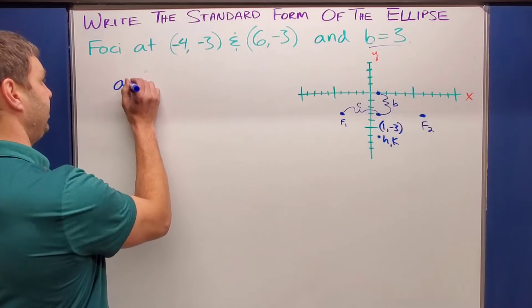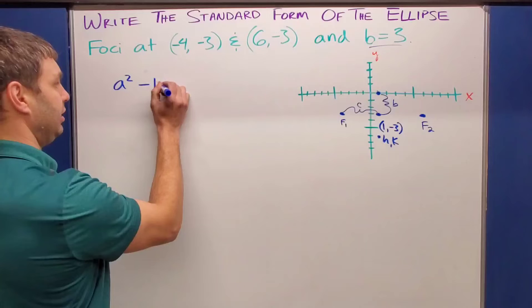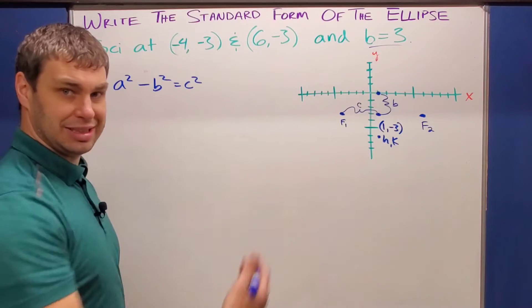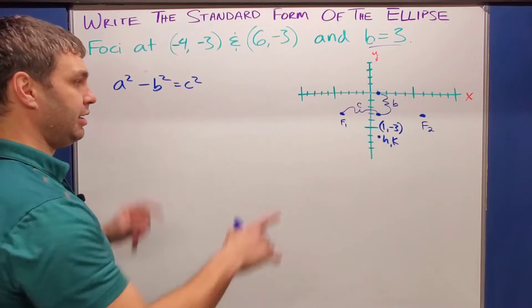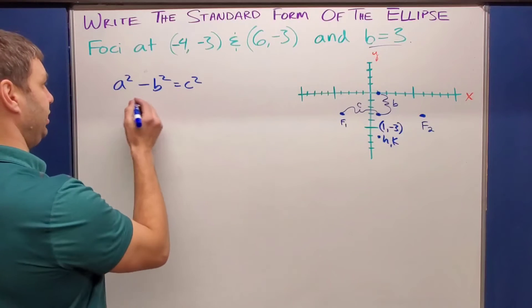But we're given this equation. It kind of looks like the Pythagorean theorem, but it's actually A squared minus B squared equals C squared. And if I plug those in, I think I'll have enough to find A by doing a little bit of math.